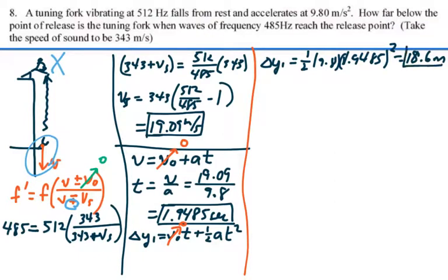The thing is though, the question is, where's the tuning fork when you hear the sound? Not when it released the sound. So the time it takes to travel up to your ear, it has fallen a little bit further. So we need to figure out what that time is. Now we know that that distance that travels is this delta y1, which is 18.6 meters, and it's going to do it at the speed of sound.